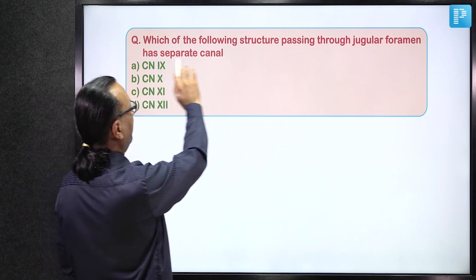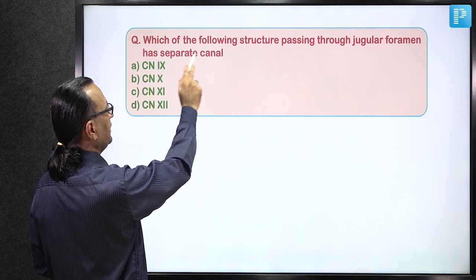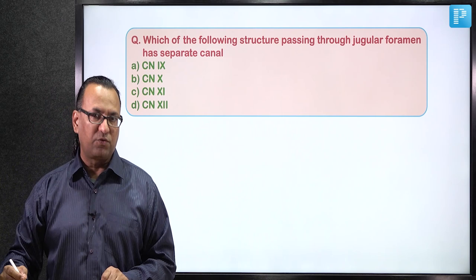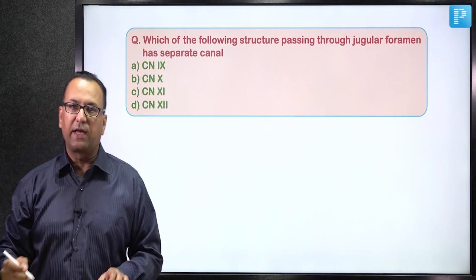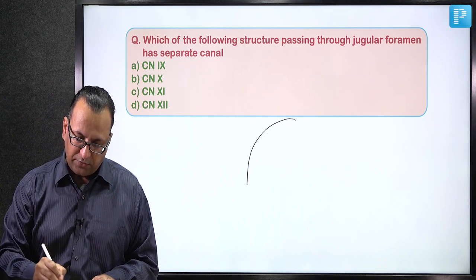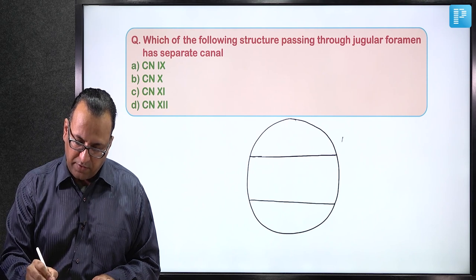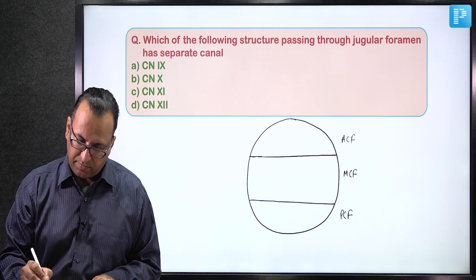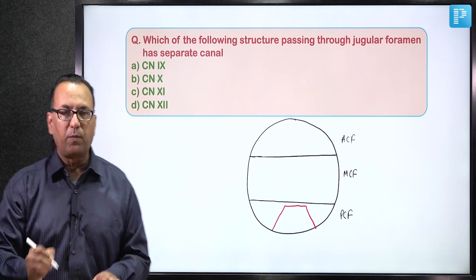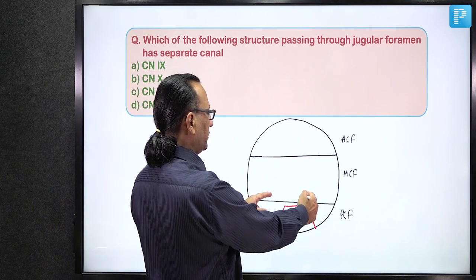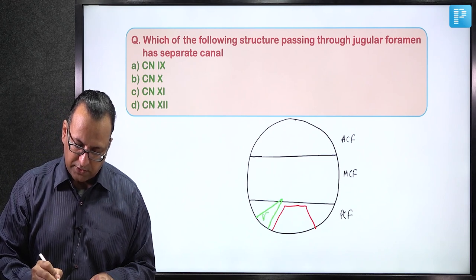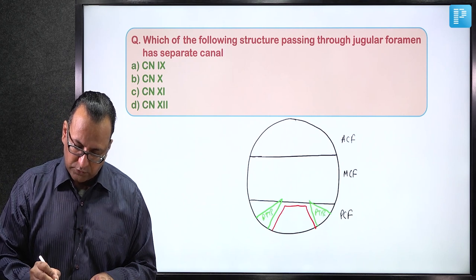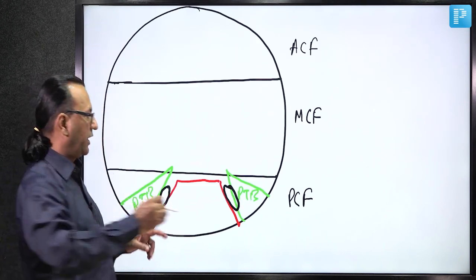This question asks which structure passes through the jugular foramen via a separate canal. The jugular foramen transmits the internal jugular vein (formed by union of inferior petrosal sinus and sigmoid sinus) along with cranial nerves 9, 10, and 11. Looking at the floor of the posterior cranial fossa: the jugular foramen lies between the occipital bone medially and the petrous temporal bone laterally.